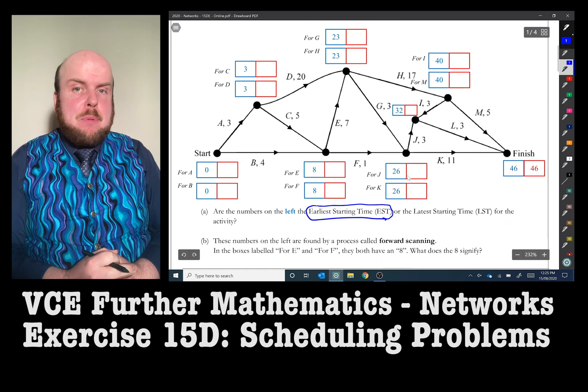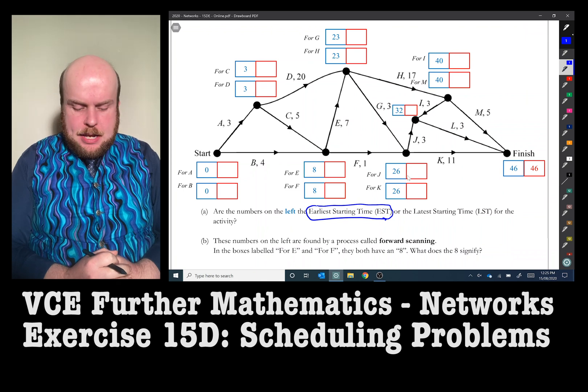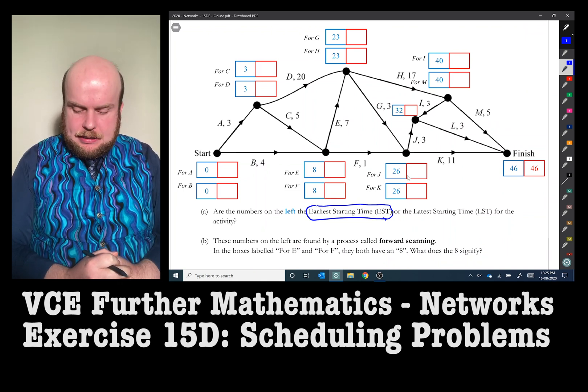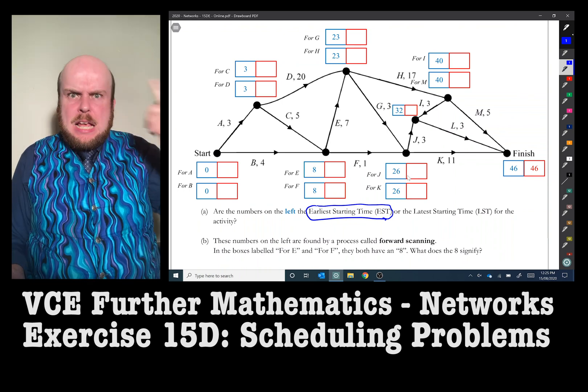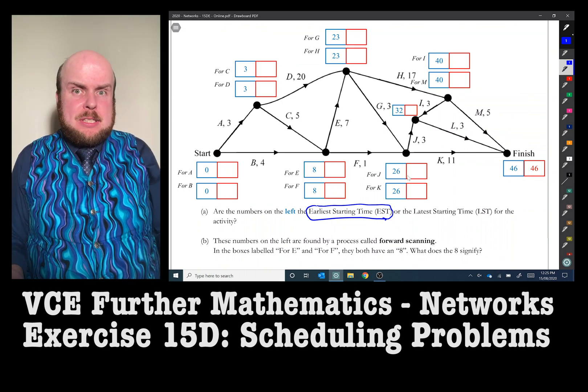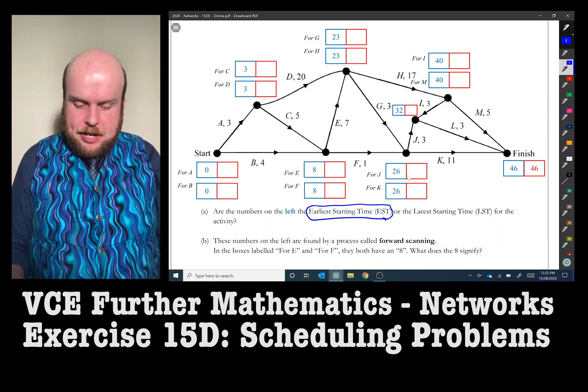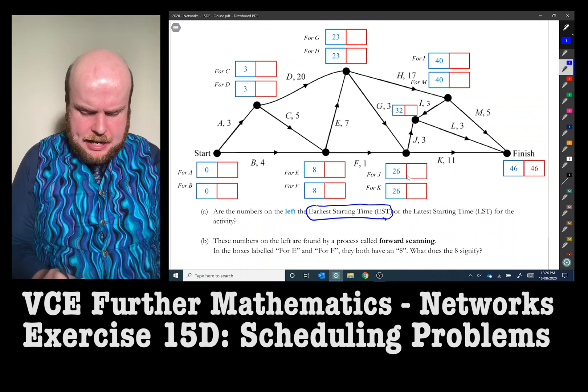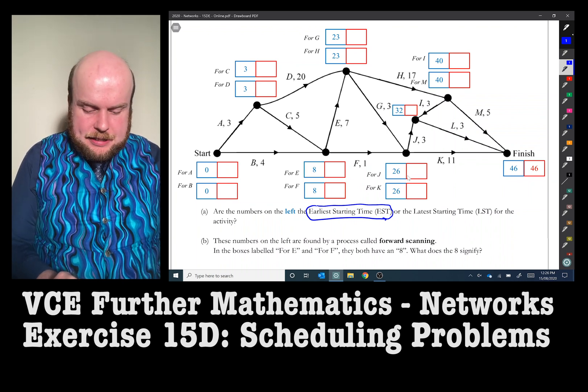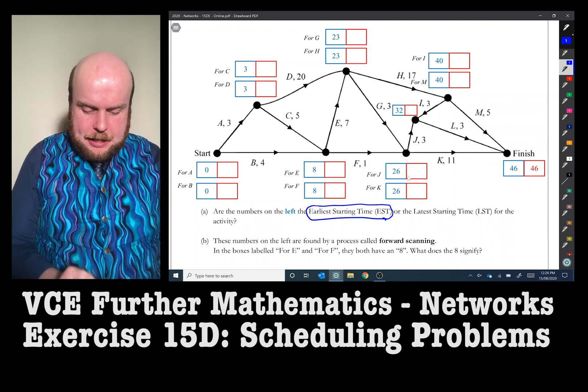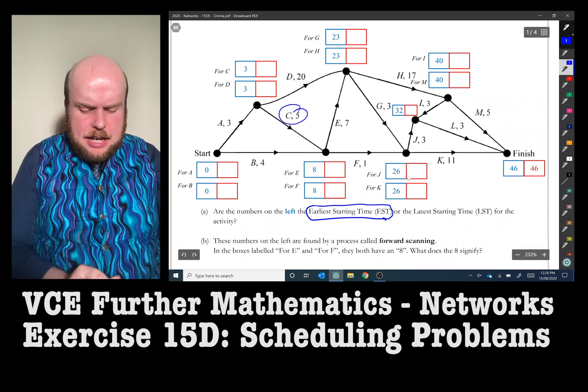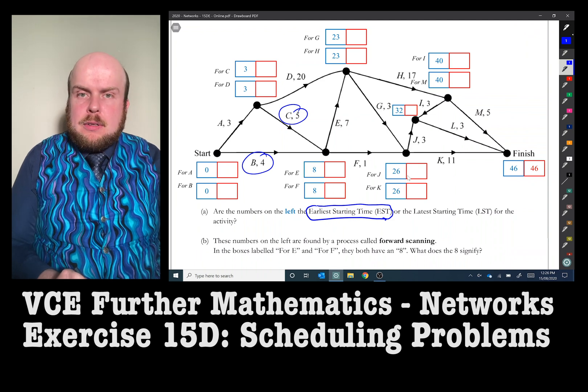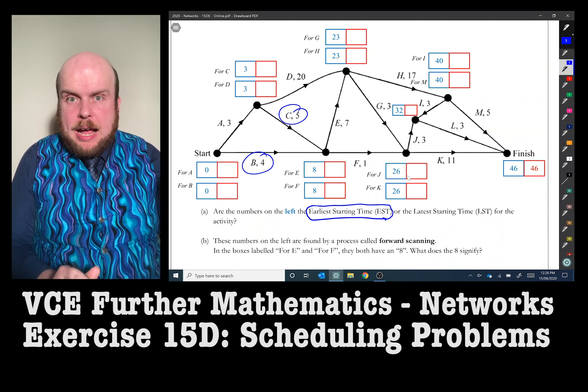These numbers on the left are found by a process called forward scanning. So in the boxes labeled for E and for F, they both have an eight, but what does the eight signify? Well, it might help if we look at what the predecessors for E and F are. What are the predecessors for E and F? The predecessors that come before it is C and B. So how long does it take to get project B done? Well, it takes four hours.